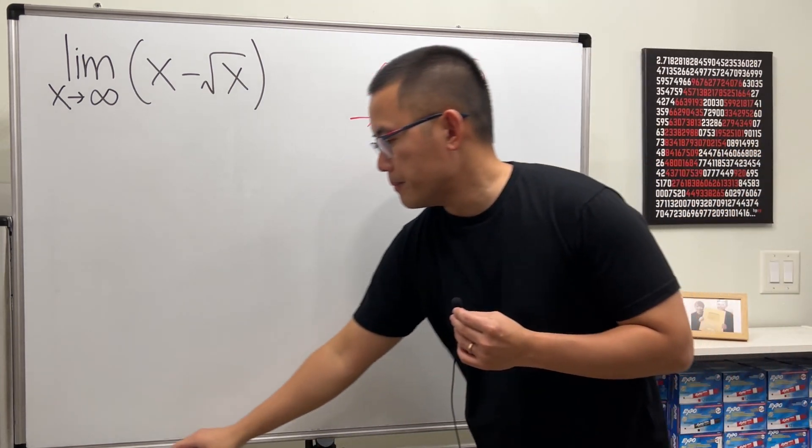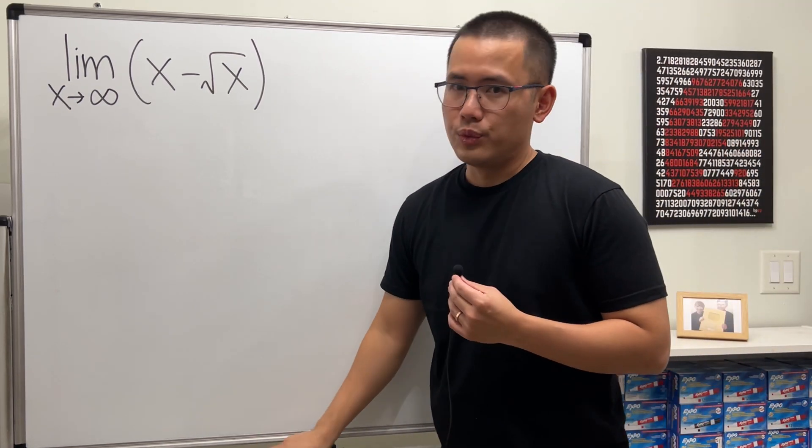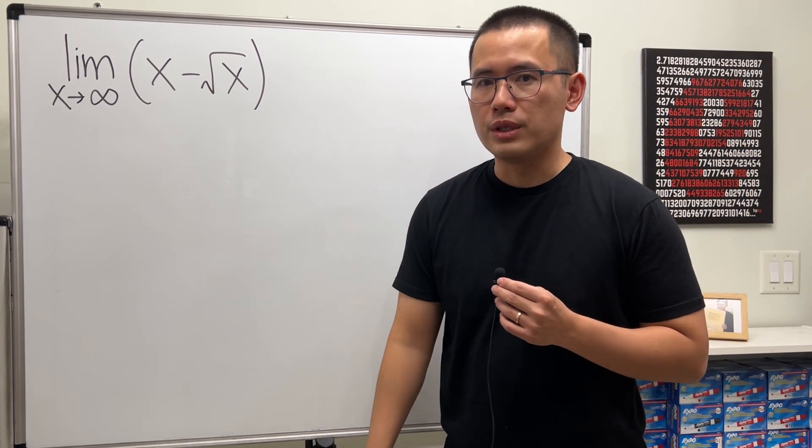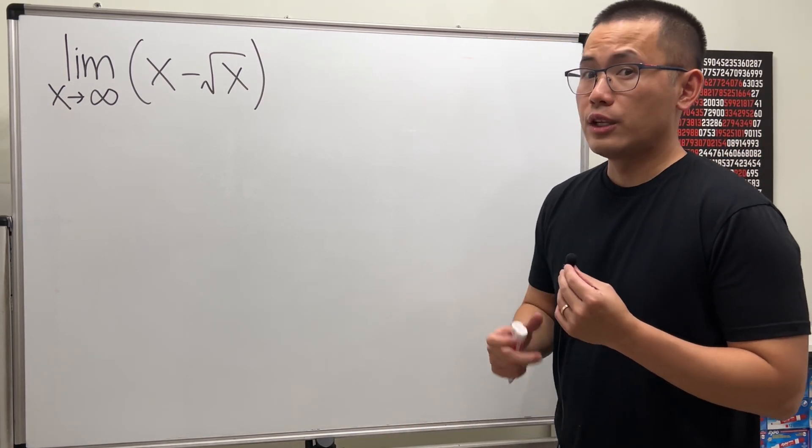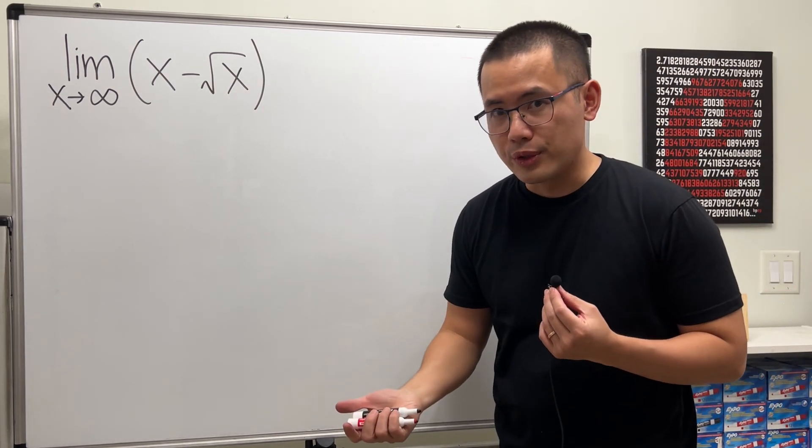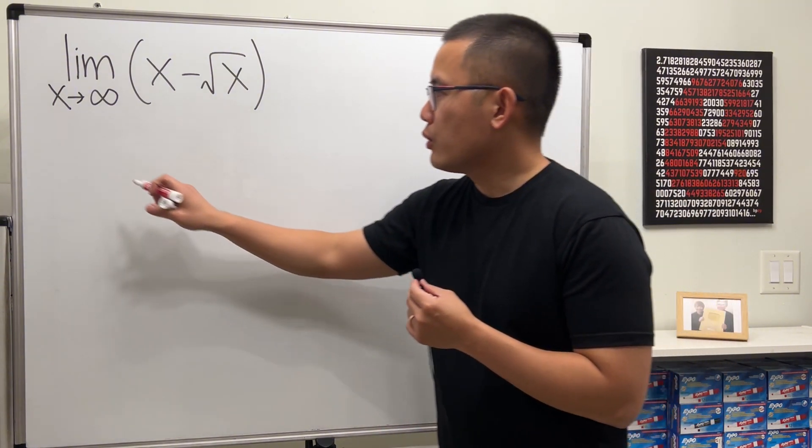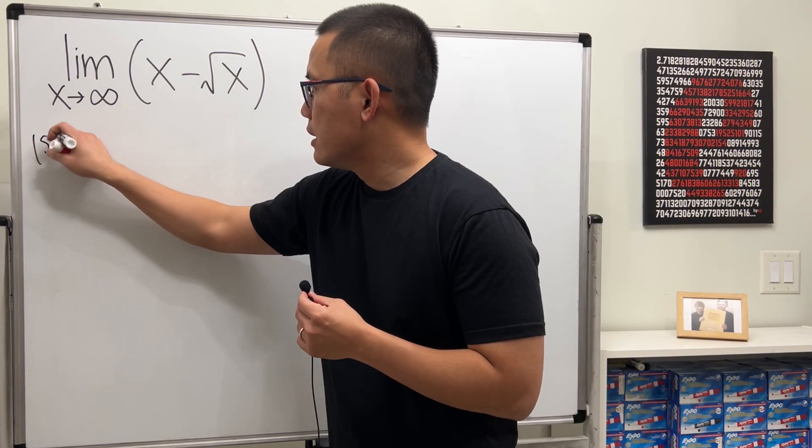This is an indeterminate form meaning we don't know what the answer is yet unless we do more work. So what do we do? I want to show you two ways to do it. The first way is like the usual business when we have square roots: multiply by its conjugate.